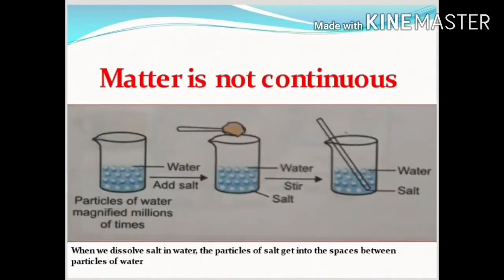How can we say that matter is not continuous? Matter is not continuous and is particulate in nature — that is, it is made up of particles. Look at the picture: when salt is dissolved in water, the water level does not change. This indicates that there are some vacant spaces among the particles of water, and the salt particles have occupied the space between the water particles. So we can say that matter is not continuous.